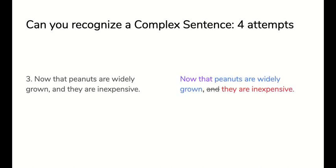Number three. Now that peanuts are widely grown and they are inexpensive. That is not a complex sentence. It's trying to be one. But unfortunately, because somebody left the and in there, it doesn't make any sense. You've got to take that and out. You can either have a compound or a complex, but that's not the way you make it. So you got to take the and out.